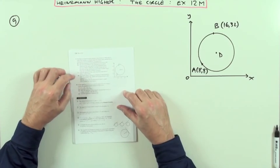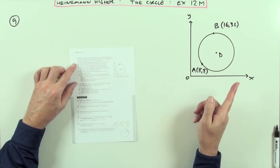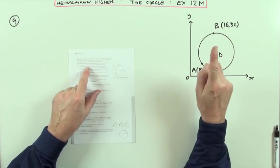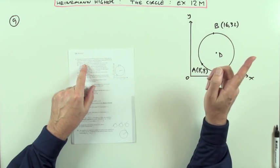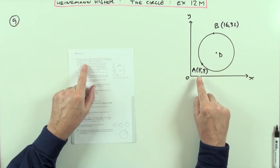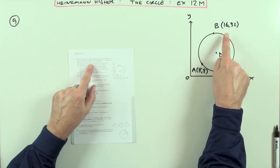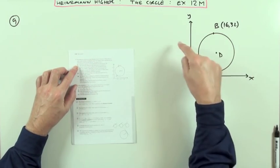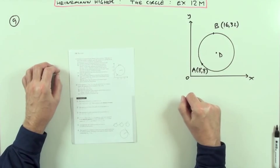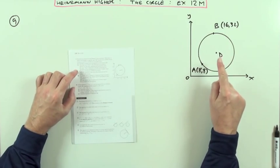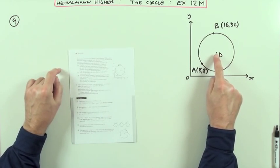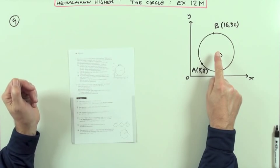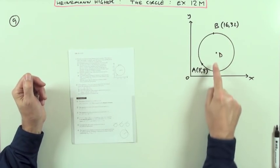Number nine, big wordy question. Here's the diagram. We've got two points, so let's extract the geometrical parts of it. A at (8,8), B at (16,32). Find the equation of the perpendicular bisector. That'll be handy because it'll pass through the center. It tells you the center is equidistant from both axes, so I know the equation of that line.